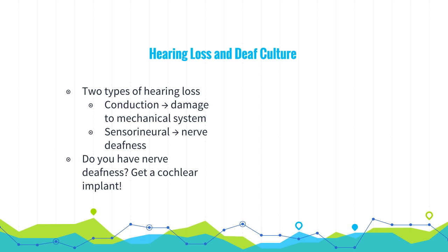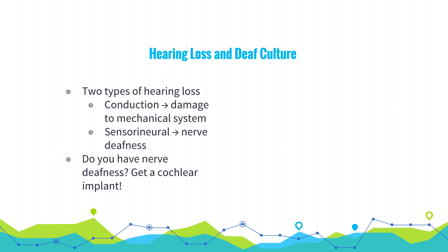There are two types of hearing loss. The first is conduction hearing loss, caused by damage to the mechanical system that transports sound waves to the cochlea. The second is sensorineural hearing loss, which involves damage to the cochlea's receptor cells or to the auditory nerves — also called nerve deafness. If you have nerve deafness, there's an option to fix it: a cochlear implant, a device surgically placed in your ear that converts sounds into electric signals and stimulates the auditory nerve, restoring hearing.